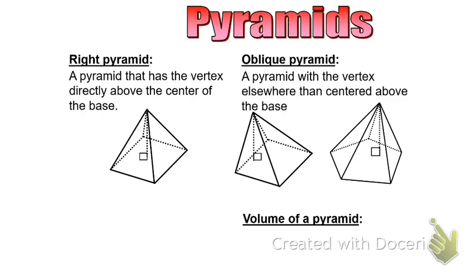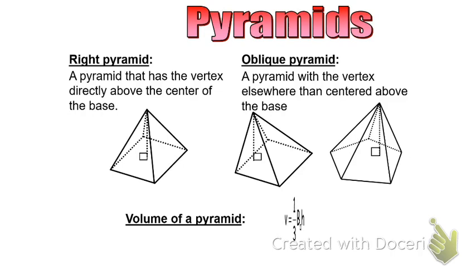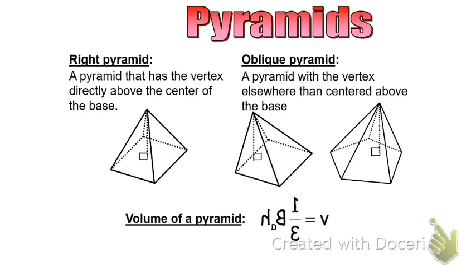Now either way, the volume of a pyramid is found by using one-third of base area times height. You just have to be careful what the height of the pyramid actually is.